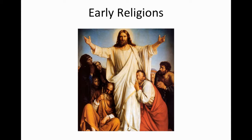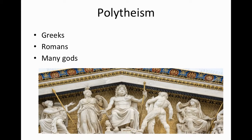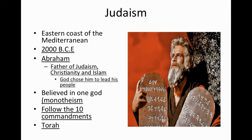Our last piece of this lecture — we're going to dive into some of the early religions. Before we have Christianity, most empires or civilizations were polytheistic. The Greeks and the Romans believed in many gods — Zeus, for example. If you saw Wonder Woman, that kind of referenced the Greek gods. Polytheism is early religion. However, that's going to change with Judaism.